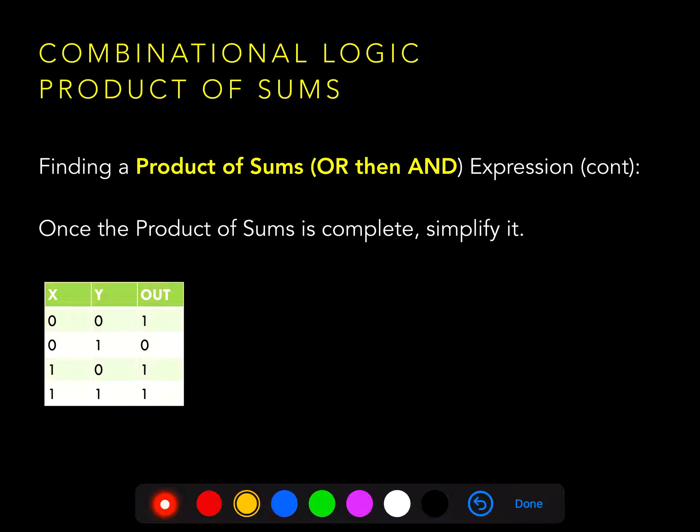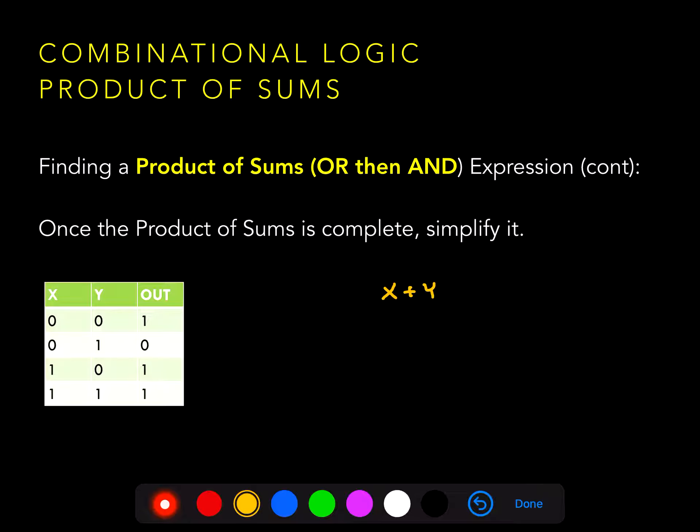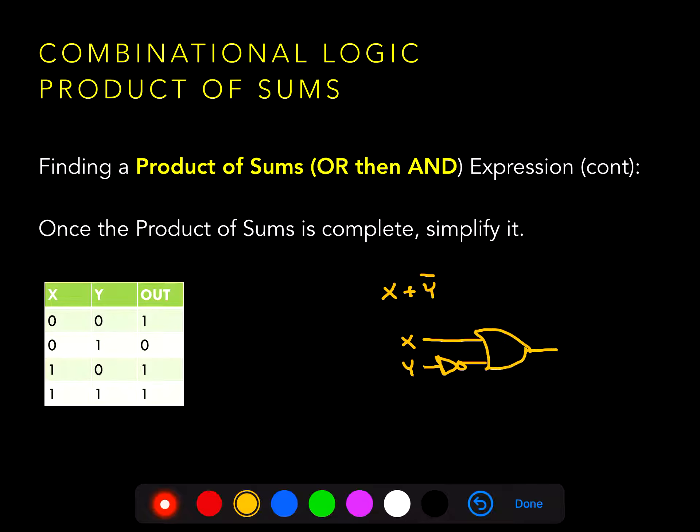Once we have that expression, we can simplify it, which in this case is not possible because we only have a single term. Or we can apply De Morgan's theorem to adjust how we implement it. So inherently, the product of sums produces an OR gate implementation here.